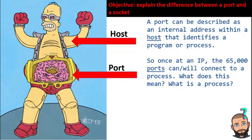Both computers have port numbers, and the port is a place inside a computer. Think of it like an address to an address — it's an internal address. The external address would be like the IP address. To keep this simple, just think of a program and a process as basically the same thing.